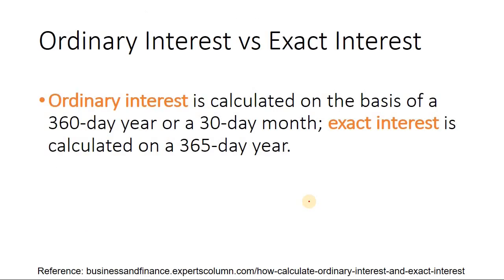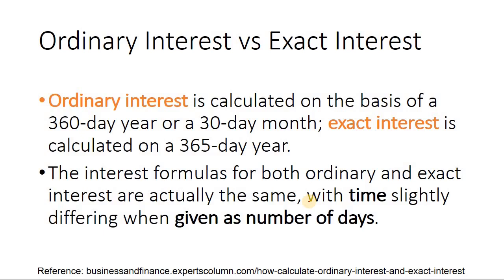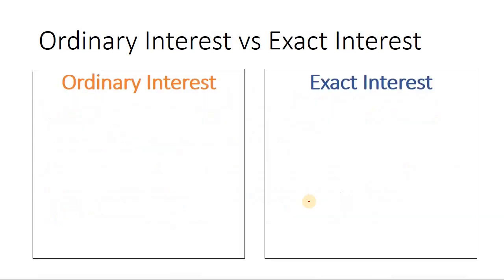Ordinary interest is calculated on the basis of a 360-day year or a 30-day month, while exact interest is calculated on a 365-day year. The interest formulas for both ordinary and exact interests are actually the same, with time slightly differing when given as number of days. So if we have ordinary interest, one year is equal to 360 days.